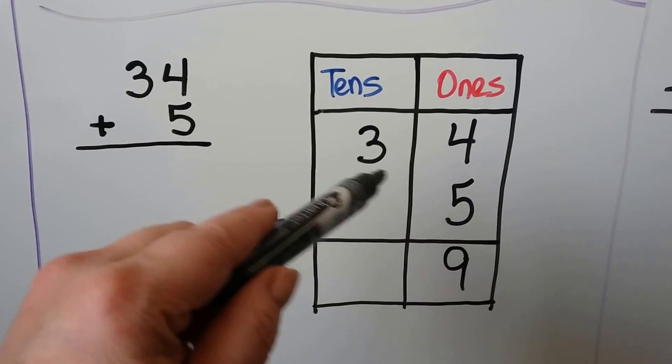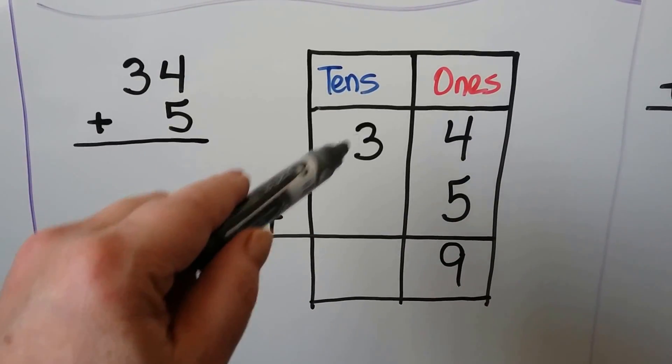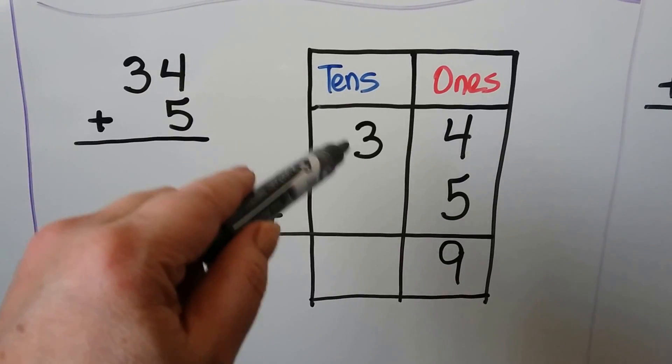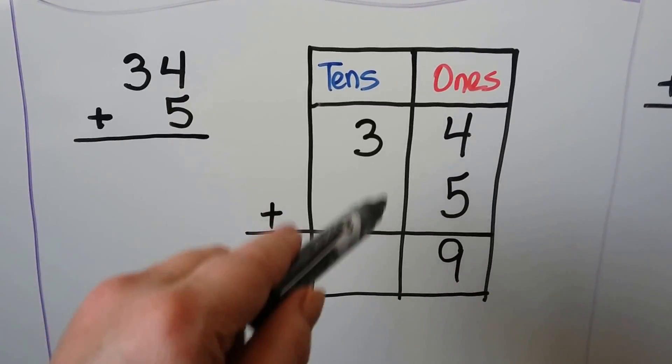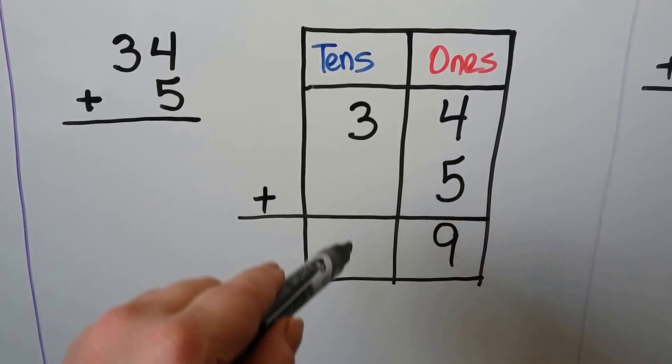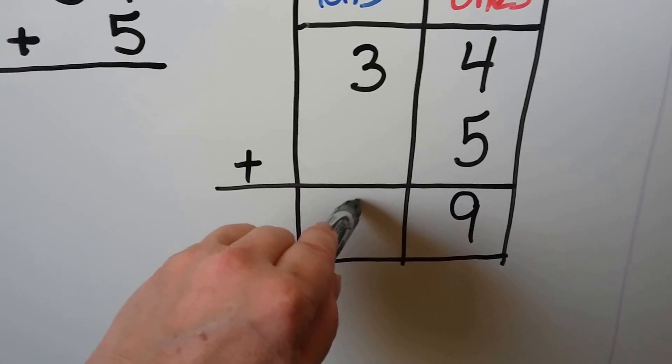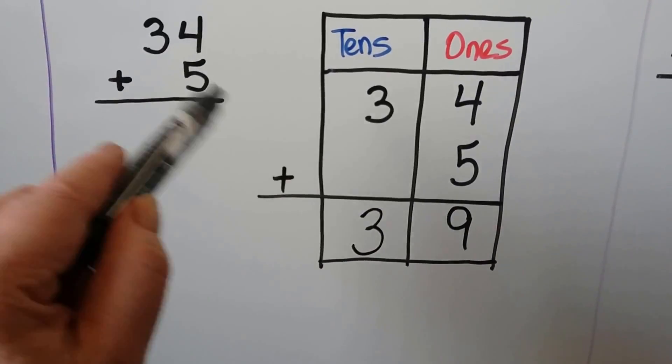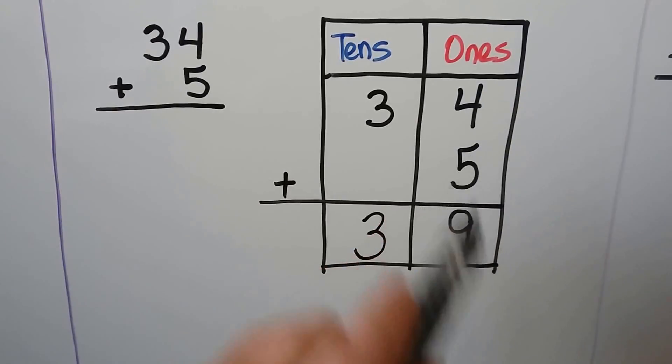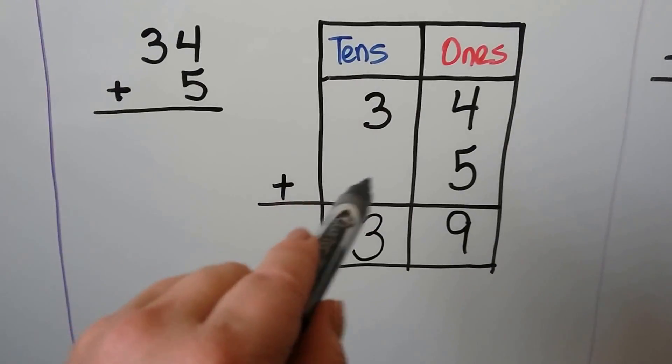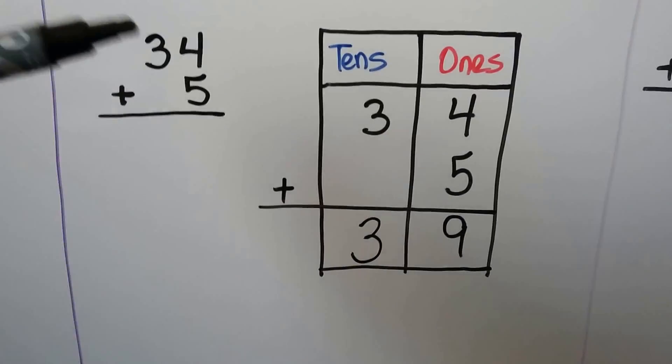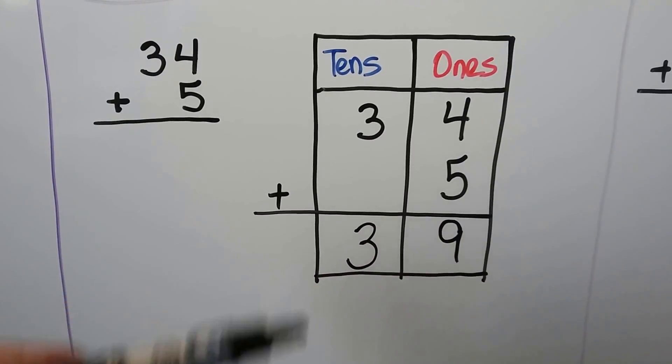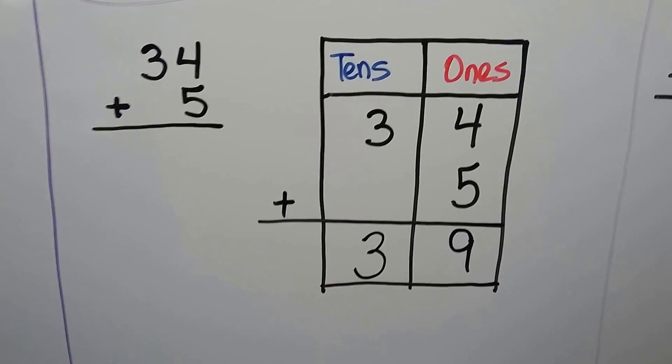There's nothing to be added in the tens place except the only thing we have is this 3. So because there's no number here, we just drop the 3 down. See? It's not being added to anything. The 5 is just 5 ones. So there's no tens here. We just bring the 3 down. So we know that 34 plus 5 is equal to 39.